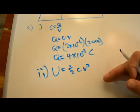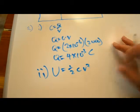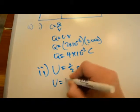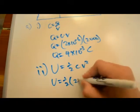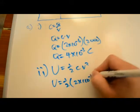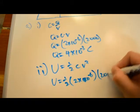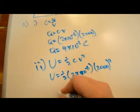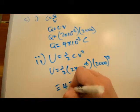We plug in the same numbers from part 1. So U equals one half times 2 times 10 to the negative 6 times 2000 squared, which equals 4 joules of energy.